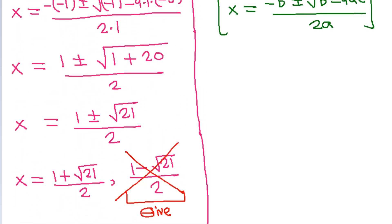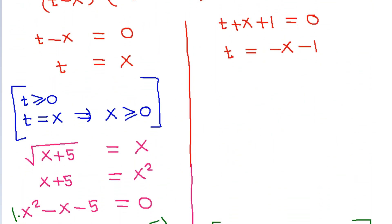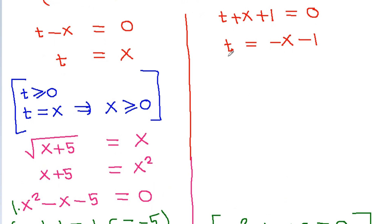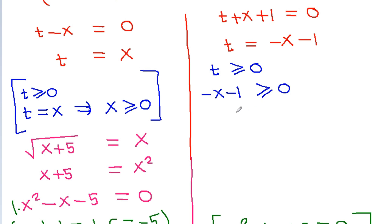For the second case, t equals minus x minus 1. Since t is greater than or equal to 0, we need minus x minus 1 to be greater than or equal to 0, so minus x is greater than or equal to 1, meaning x must be less than or equal to minus 1.